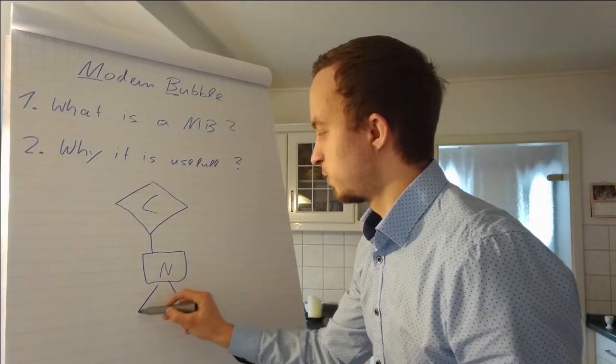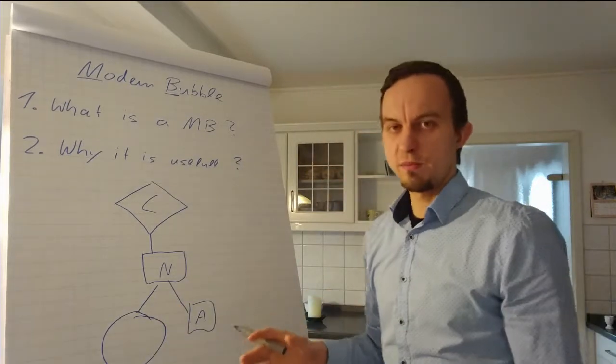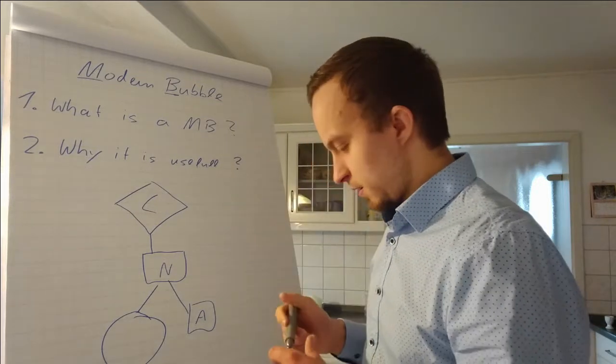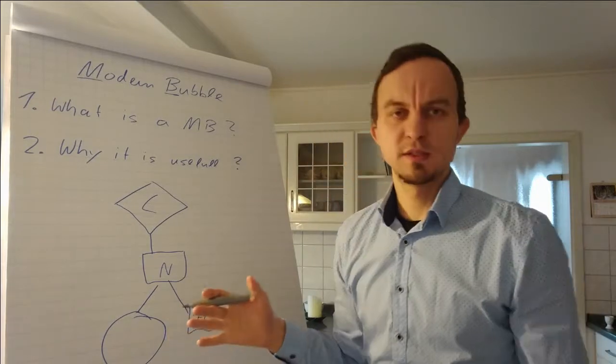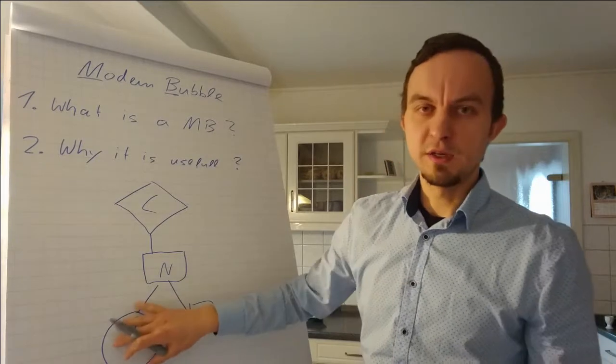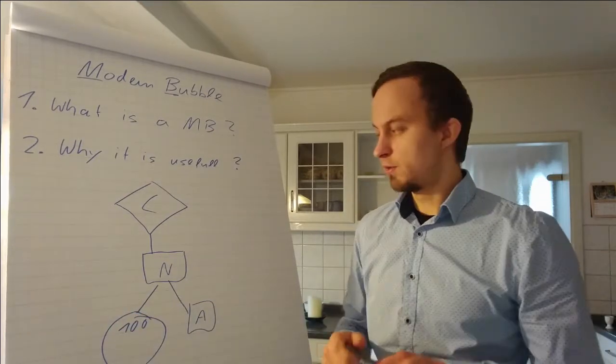So for example, here we have a modem bubble and inside the modem bubble there are some numbers. I will explain them later. If the modem bubble is green, for example the modem bubble represents 100 modems and this is a real time bubble. If the bubble is green then the cluster is running perfectly.